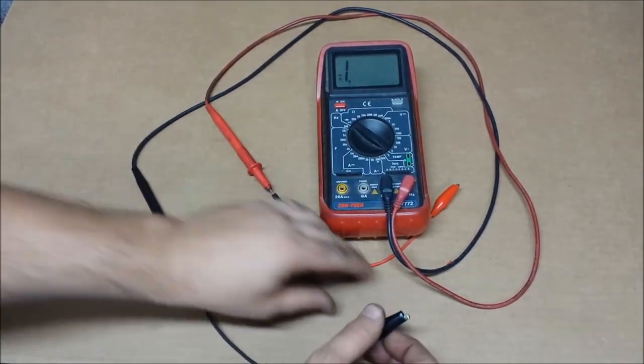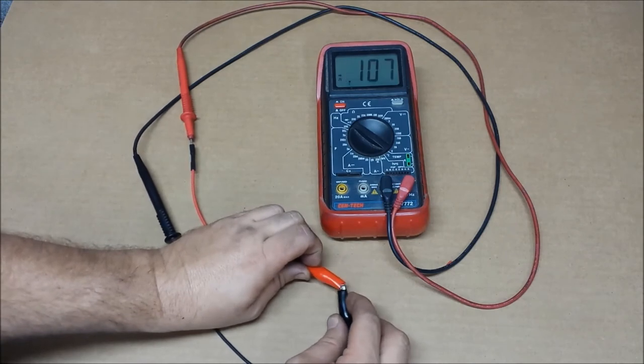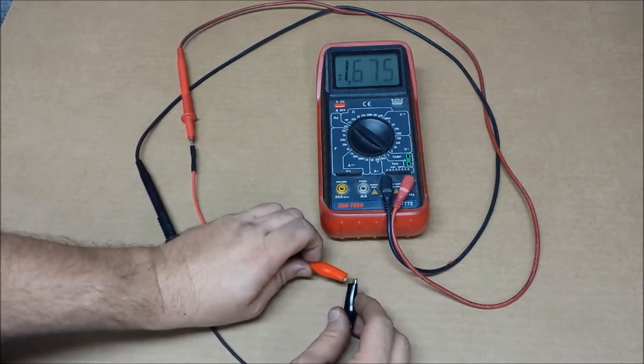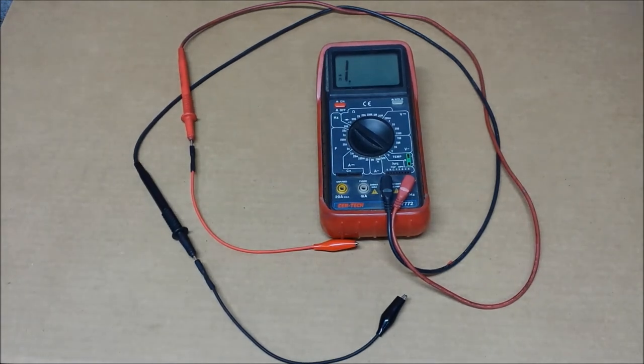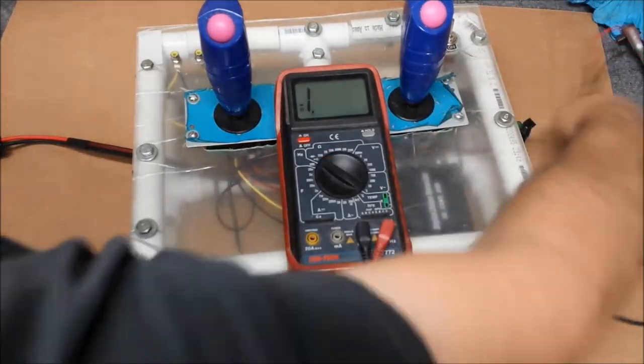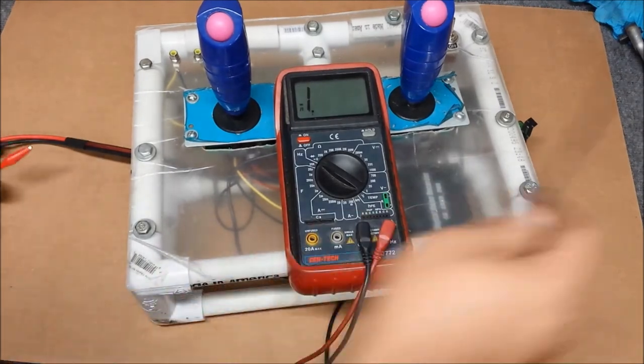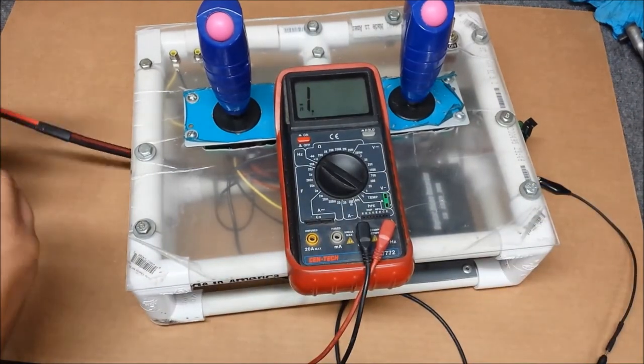So we can turn on our multimeter here. Make sure we're getting a connection. All good. Let's try it out on something else. This is a controller I made for another project I'm working on. Kind of a lame project, but you'll see it on this channel eventually.